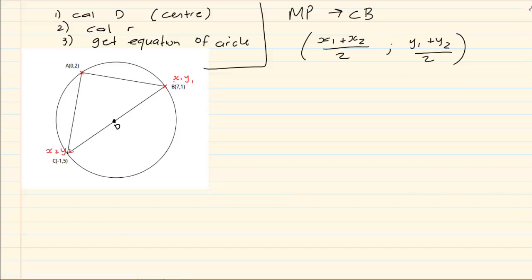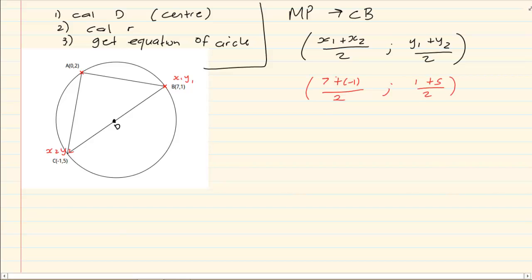We are going to have (7 plus negative 1) all over 2 for x, and (1 plus 5) all over 2 for y. This gives us 6 divided by 2 equals 3, and 3. So the center of the circle is (3, 3).